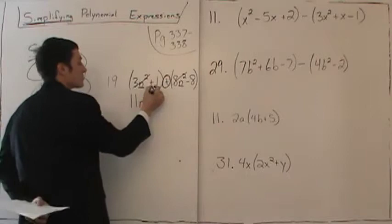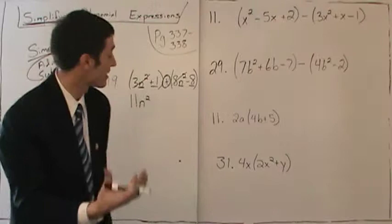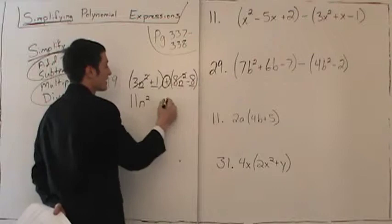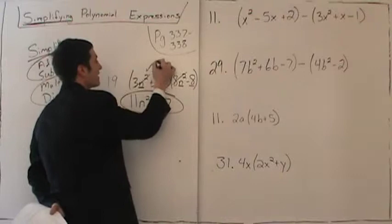Now add the numbers: we have positive 1 and negative 8. The rule is if the signs are the same, you add; if the signs are different, you subtract. Since the signs are different, subtract: 8 minus 1 is 7, take the sign of the larger, so we get negative 7. Notice that a binomial added to a binomial gave us a binomial.